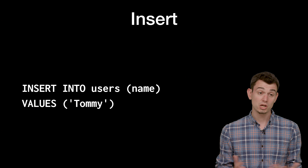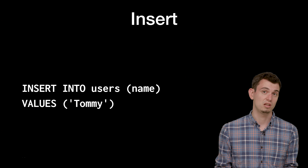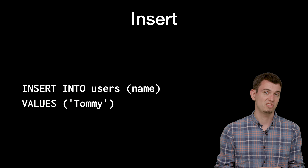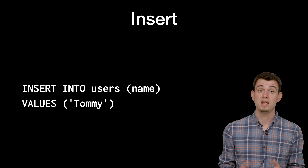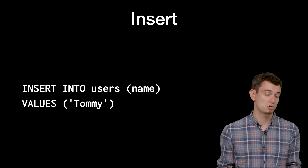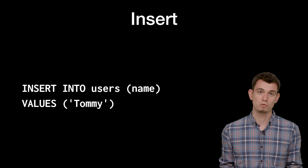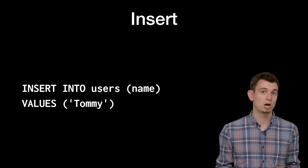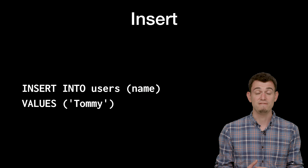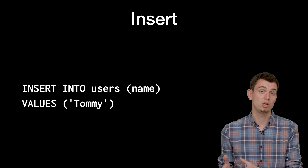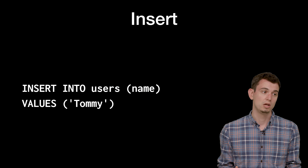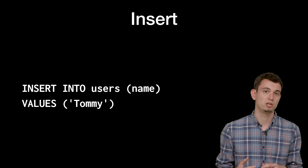The next query is inserting data into the table. To insert a new row, we start our query with INSERT INTO followed by the name of our table — that's users — and then a list of the columns we want to supply values for. Here we're just supplying one column called name. Then we say VALUES followed by the values we're going to insert. So here we're inserting one new row, and for the name column we're inserting a value of Tommy.